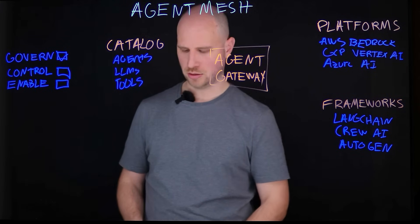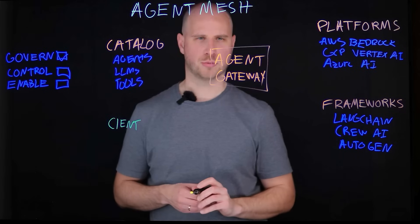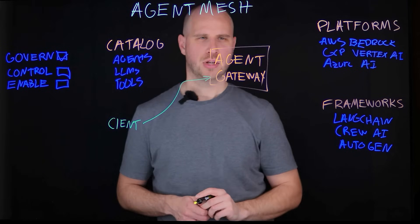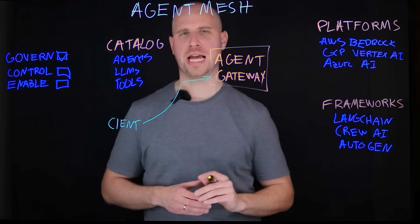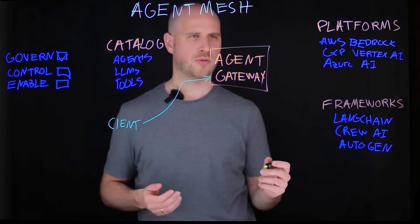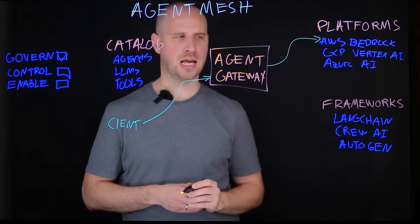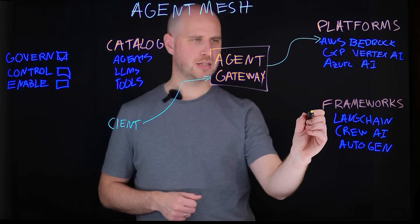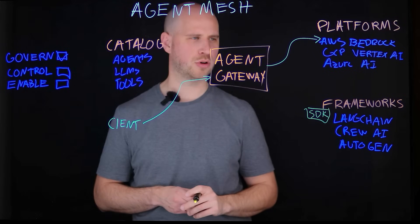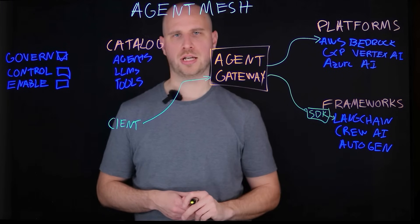Imagine that you have a client that wants to invoke an agent of some sort. It invokes the agent gateway, and the agent gateway itself then invokes one of the agents available in one of the platforms and frameworks that you might be using — for example, an Amazon Bedrock agent or a Langchain agent. What Gravity has built is effectively an agent mesh SDK that is embedded into all of the different agent frameworks, allowing Gravity to invoke any agent running in your agent frameworks.